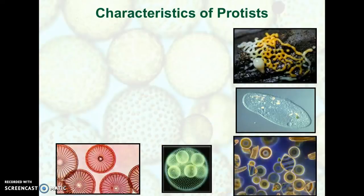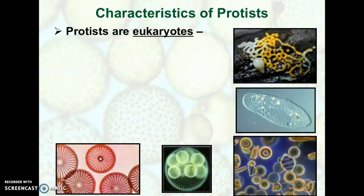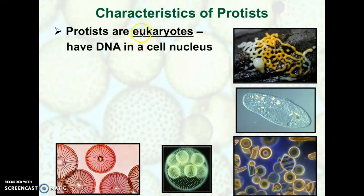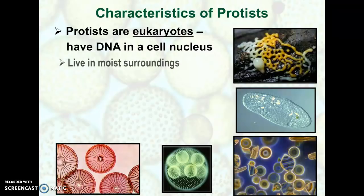We're starting with protists. Protists are in the kingdom Protista, whereas humans are in the kingdom Animalia — the animal kingdom. Protists are eukaryotes. Looking at the stems: 'eu' means true or normal, and 'karyo' refers to cell nucleus. So protists have a true cell nucleus and will have their DNA in a nucleus, unlike bacteria which are prokaryotes because they don't have a nucleus.